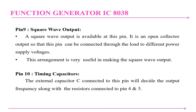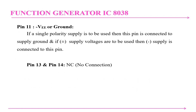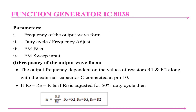Pin 9 is the square wave output. It is an open collector output so this pin can be connected through a load to different power supplies. This arrangement is very useful for making the square wave output. Pin 10 is the timing capacitor — the external capacitor connected to this pin, along with the resistors at pins 4 and 5, decides the output frequency. Pin 11 is minus VE or ground. If a single polarity supply is used, this pin is connected to supply ground; if ±supply voltages are used, the minus supply is connected here. Pins 13 and 14 represent no connections.